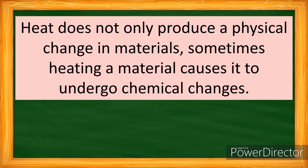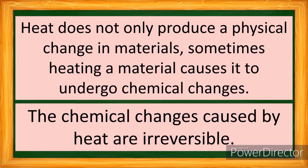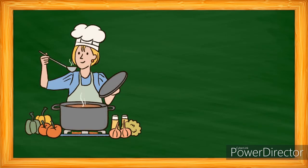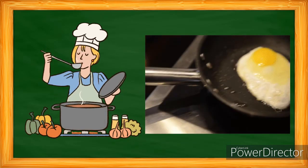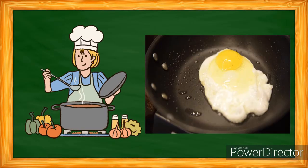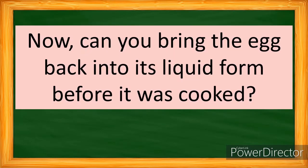Heat does not only produce a physical change in materials. Sometimes, heating a material causes it to undergo chemical changes. The chemical changes caused by heat are irreversible. An example of this is cooked food. When your mother cooks an egg for your breakfast, it has undergone a chemical change. Now, can you bring the egg back into its liquid form before it was cooked?